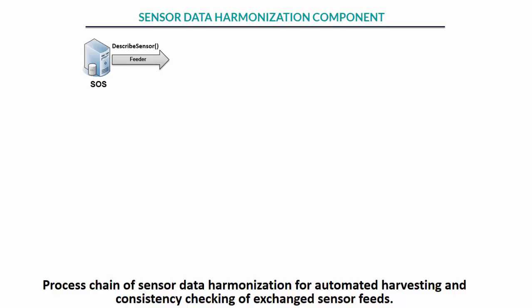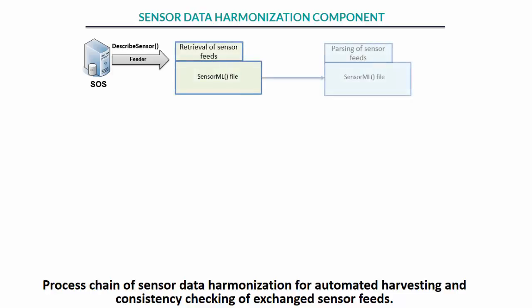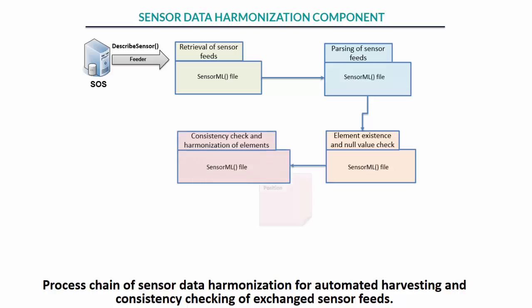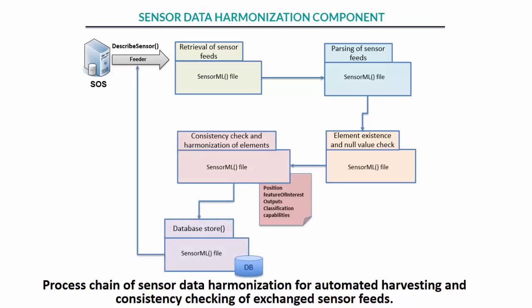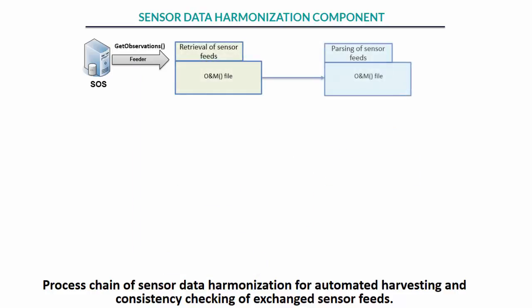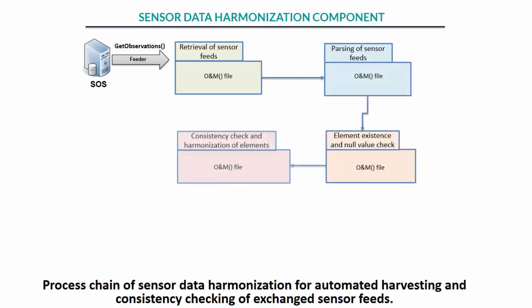The process chain of the developed sensor data harmonization component is shown here. There is a feeder in place that can pull sensor feeds, which are now standardized and described based on SensorML and Observation and Measurement encoding, from the SOS servers deployed in the producer organization. Different elements within the feeds are retrieved, parsed, and then checked if they are compliant with the profile. Depending on whether we are dealing with SensorML files or Observation and Measurement files, the subsequent pre-processing steps for validity check and harmonization of the elements are called. Finally, the harmonized elements are stored in the database.